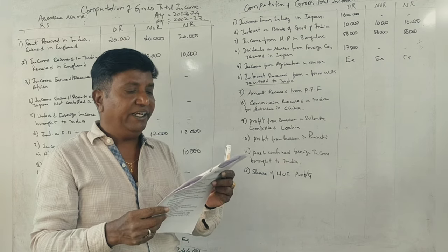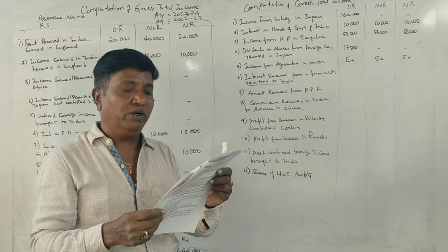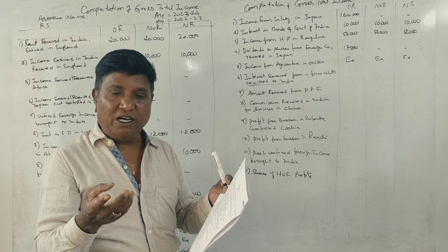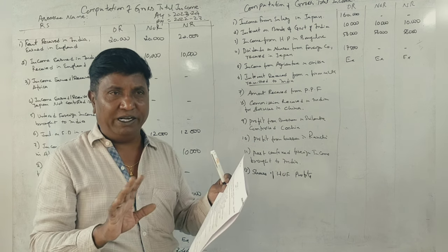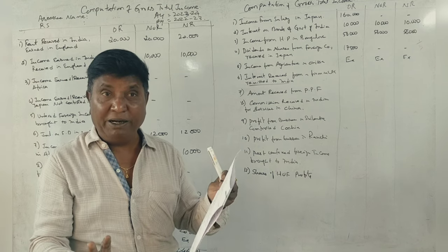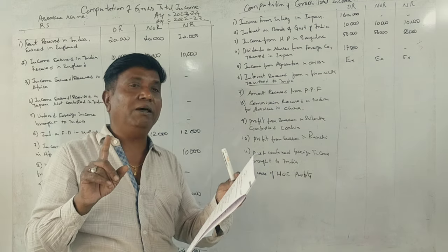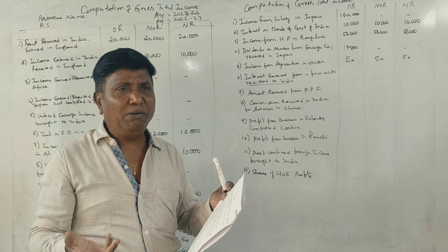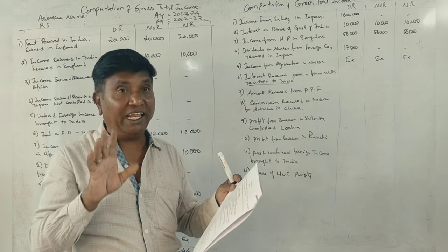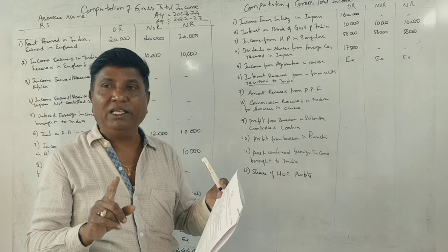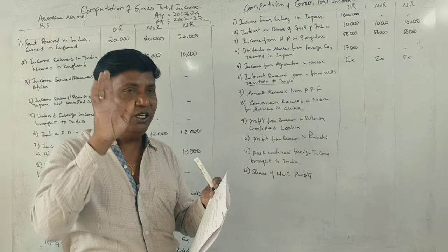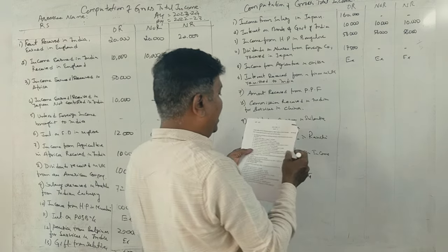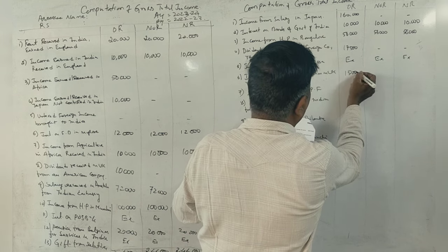Next point, interest received from a firm in UK, remitted to India, received in India, brought to India, remitted to India. So therefore, the first point is 15,000. 15,000, first case only taxable money.